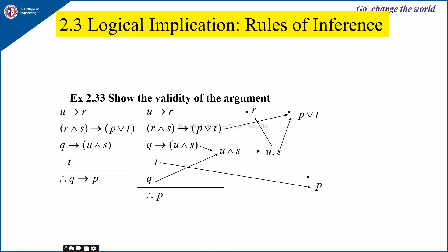Next, another example: show the validity of the argument. If they are not specified which technique to use, you can use any method. The speciality of this problem is that the conclusion is also an implication. When such a thing happens, you can consider the conclusion's left-hand side as another premise and you have to arrive at the right-hand side of the conclusion.